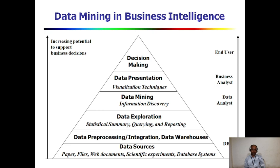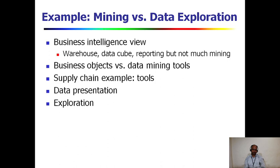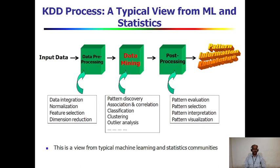This diagram shows how different technical people use data mining systems in business intelligence. This slide depicts the KDD process: we input data, perform data pre-processing, then apply different data mining techniques like association, correlation, classification, clustering, and pattern discovery. After applying these techniques we get post-processing data for pattern evaluation, pattern selection, pattern interpretation, and pattern visualization — from which we obtain actual knowledge. This is a typical view of the KDD process.